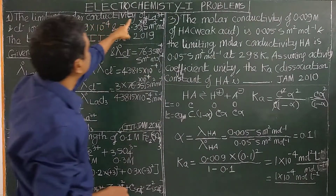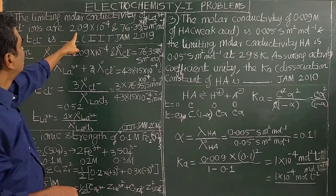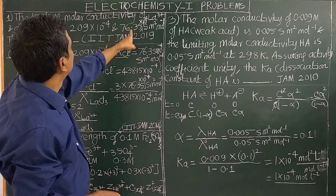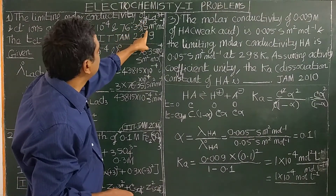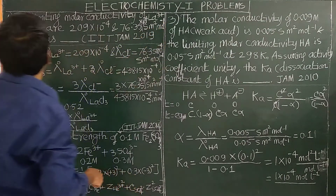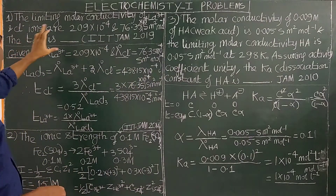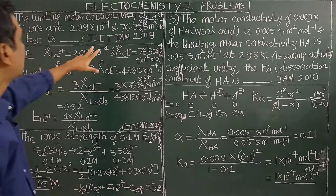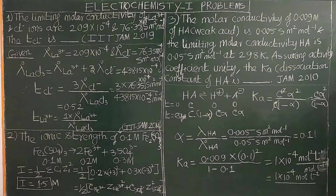The limiting molar conductivity of La³⁺ and Cl⁻ ions are 209 × 10⁻⁴ and 76.35 × 10⁻⁴ Siemens m² mol⁻¹. The question is: what is the transport number of chloride ion? This question is from IIT JAM and is based on transport number.